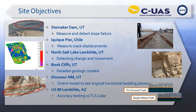In the case of Steinecker Dam, what we wanted to do with infrastructure monitoring — using structure from motion, taking pictures to develop 3D models — was first to measure and detect slope failure and be able to go back and detect any changes. We went up in a helicopter, flew, took pictures, and developed this three-dimensional model before the dam was impounded and loaded with reservoir water.